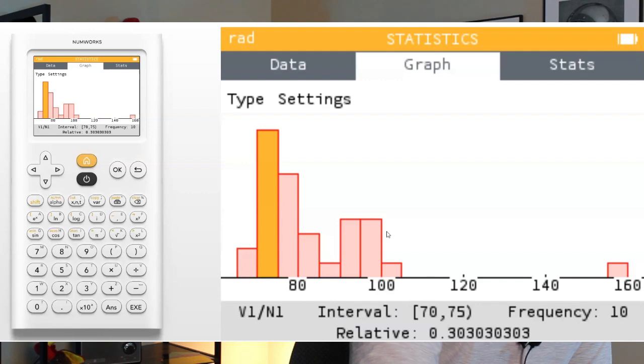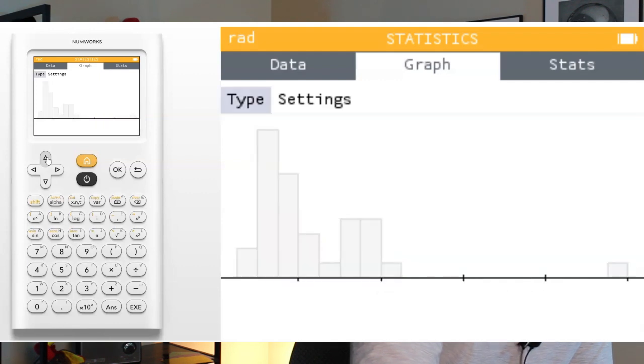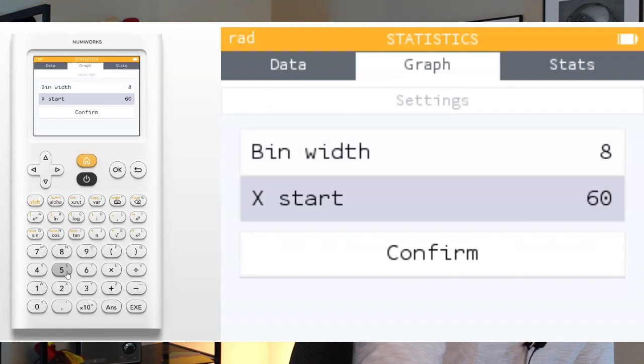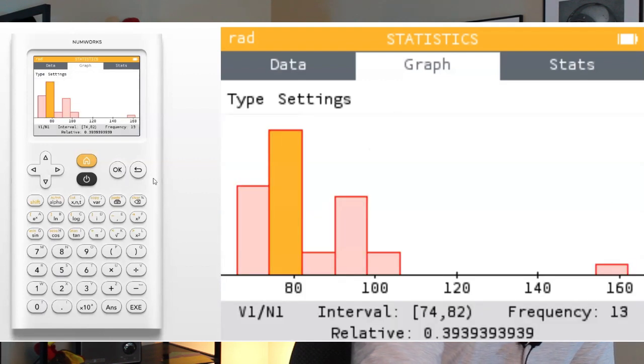Now, if you don't like how the bin is set up, you could go straight up to settings. You just got to use the cursor here, move over to settings, hit OK, and you could change the bin width to whatever you want. Maybe you want the bin width to be eight and you want to start at 50 for whatever reason and go ahead and hit confirm. OK, it'll take you back. And there's your bins that now go by eight starting at 50. So pretty cool, pretty easy way to take a look at your data.